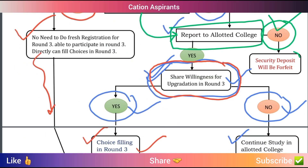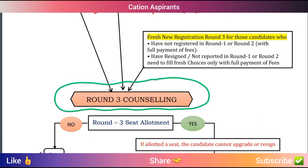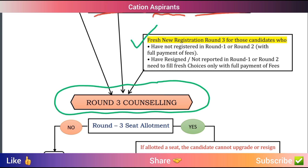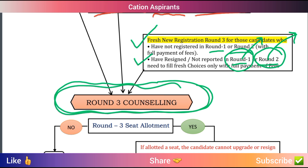In Round 3 counseling, if you have completed Round 1 and Round 2, you will do a fresh registration. If you did not report to the college in any prior round, and did not take a free exit, you will also do a fresh registration. The choice you make in Round 3 will be locked, and if conditions are not met, that choice will not be registered.